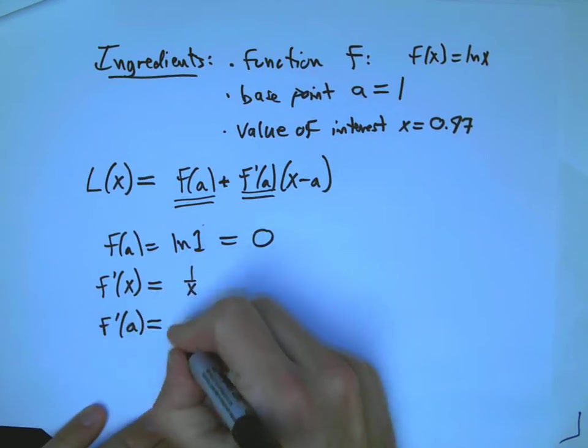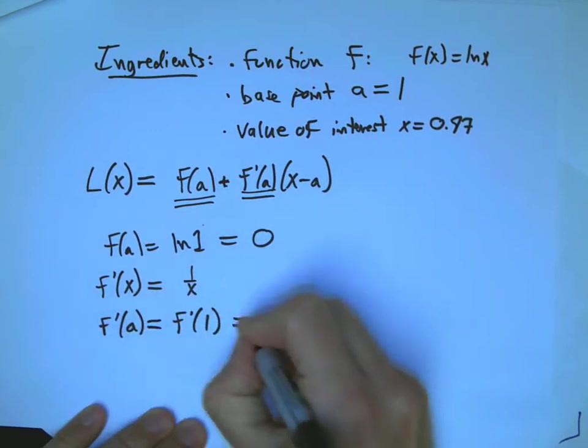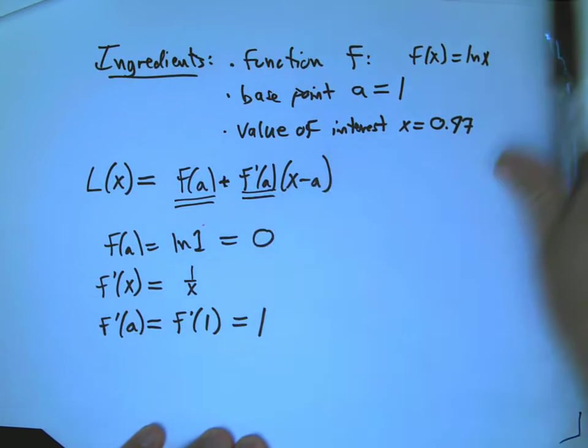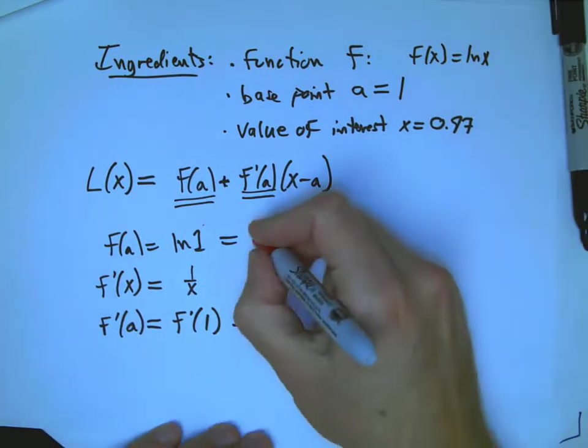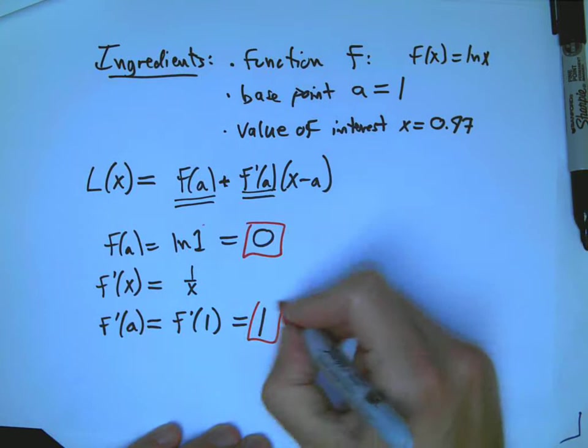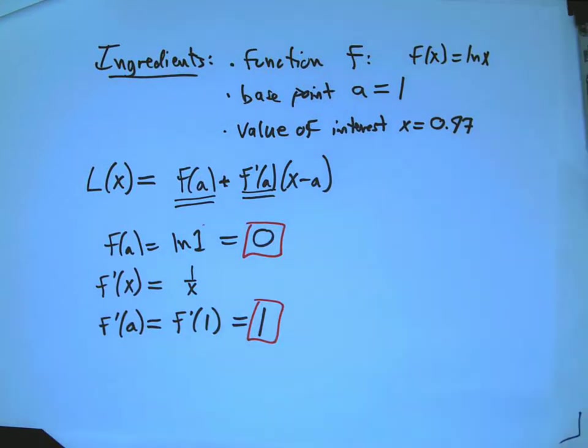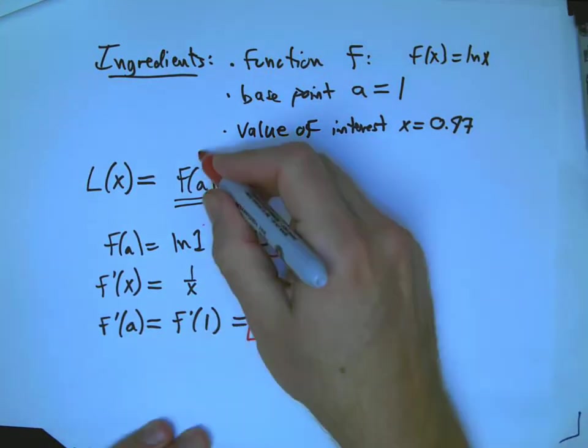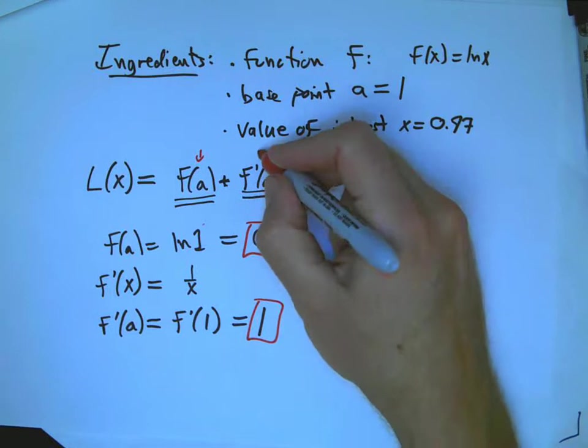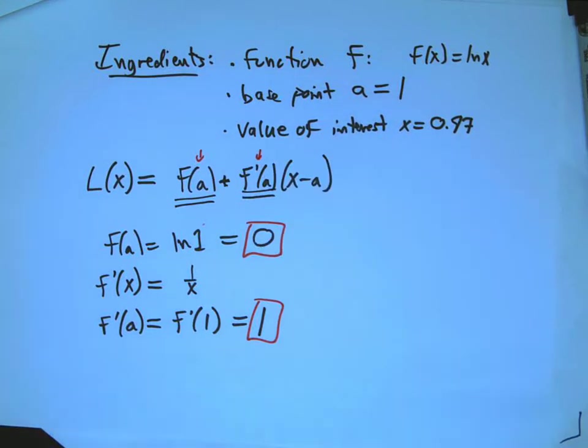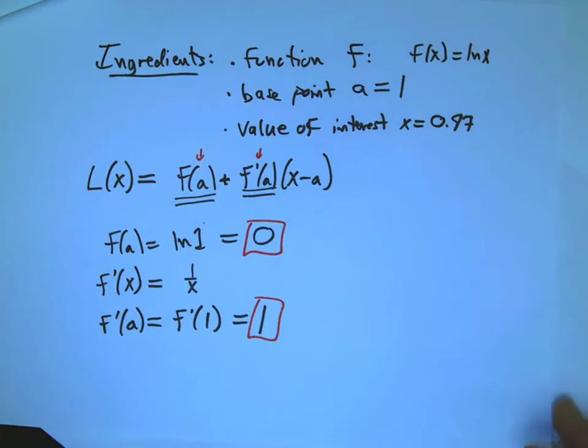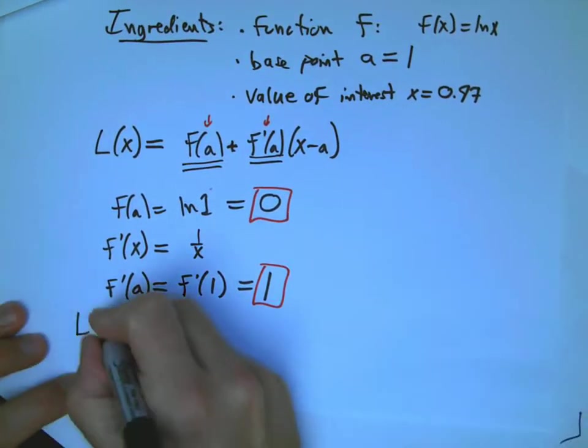Okay, so that's nice. And, in fact, it's crucial that that also be a simple number. The two simple things, the things that make a valid, decent base point for this process, is that the function value, that's this key number that goes into the linearization, and the derivative, the slope, that's the other key number that goes in there. Those have got to be simple to calculate, or else there's no point in doing this.